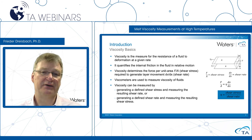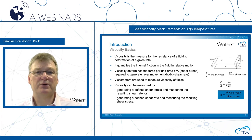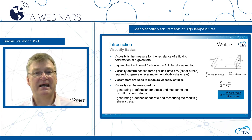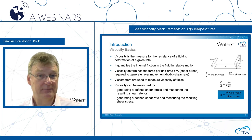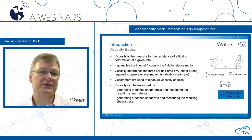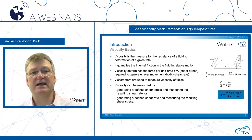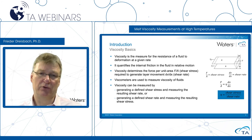Shear stress divided by shear rate is the viscosity of the fluid. To assess the viscosity of a fluid experimentally, we have two possibilities: we can control the shear stress and measure the resulting shear rate, or go the other way — control the shear rate and measure the resulting shear stress. These are the ways in which a viscometer can work.